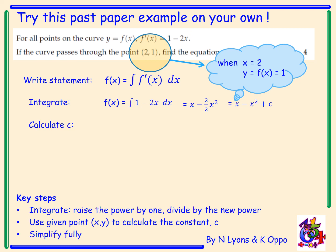So calculate c. I've got 1 equals 2 minus 2 squared plus c. That means 1 equals -2 plus c, so c must equal 3.